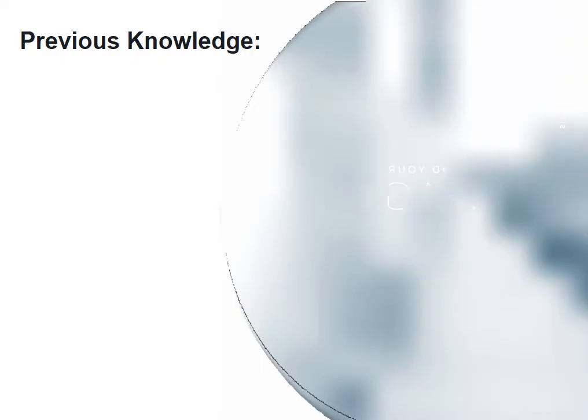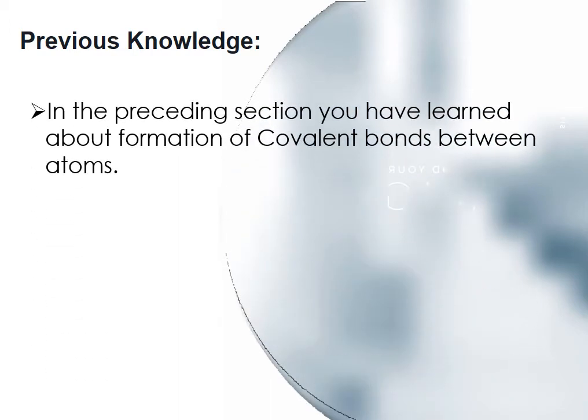Previous knowledge: In the preceding section, you have learnt about the formation of covalent bonds between atoms. A covalent bond is the mutual sharing of electrons between two or more atoms — either between two similar atoms or between two dissimilar atoms.